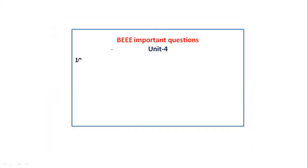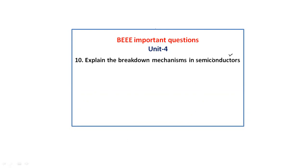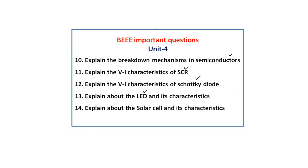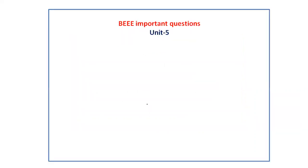In unit 4, explain the breakdown mechanisms in semiconductors: avalanche breakdown and Zener breakdown. Next, explain the VA characteristics of the SCR (silicon controlled rectifier) and the Schottky diode. Also explain about the LED (light emitting diode) and its characteristics, and explain about the solar cell and its characteristics.